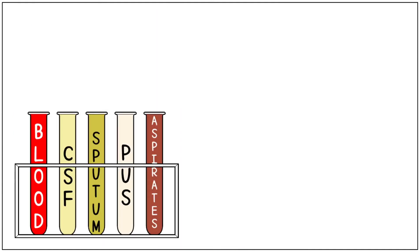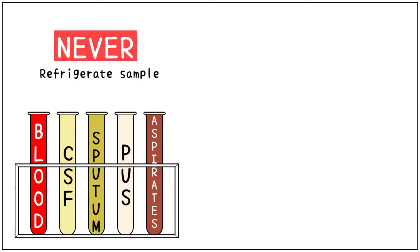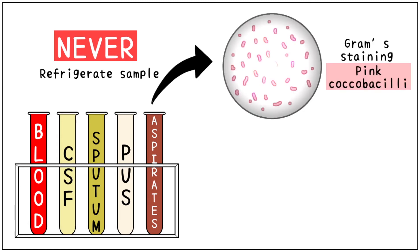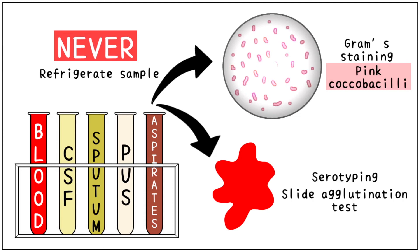For the laboratory diagnosis of Haemophilus, we can use blood, CSF, sputum, pus or any other aspirates depending on the site of infection. It is important to remember that Haemophilus is a delicate organism and is easily killed by low temperature, so never refrigerate these samples. On gram staining, we can see pink or gram-negative coccobacilli. For serotyping, slide agglutination test is preferred.